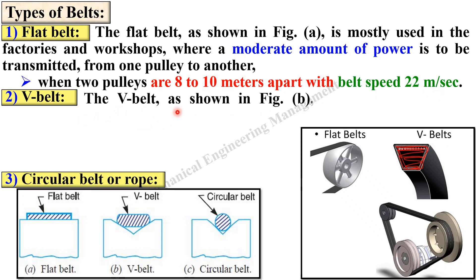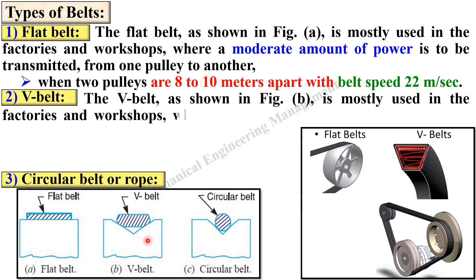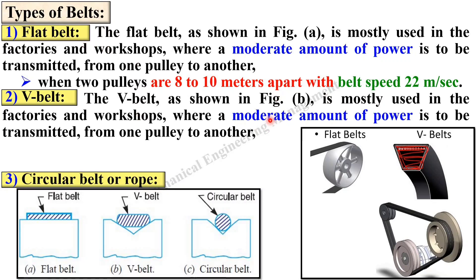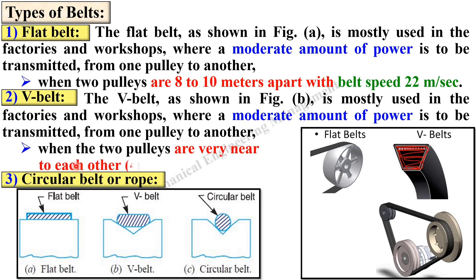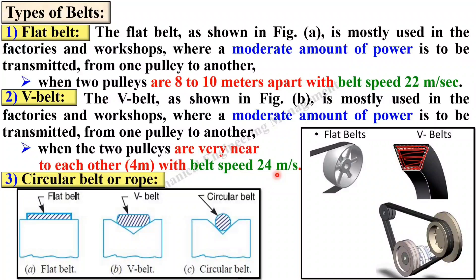For the V belt, as shown in figure B, it is mostly used in factories and workshops like the flat belt, and the amount of power is also moderate. But the important parameter now changes: the V belt is used when two pulleys are very near to each other — approximately 4 meters — with belt speed of 24 meters per second. Both flat and V belts are for moderate power, but flat belt suits 8 to 10 meters distance at 22 m/s, while V belt suits up to 4 meters at 24 m/s.